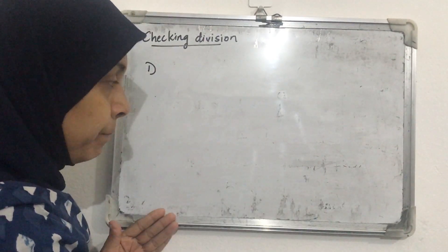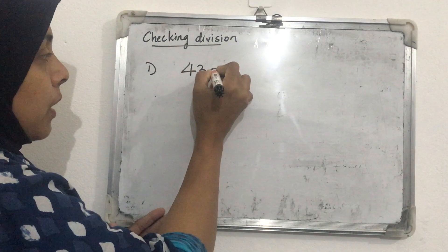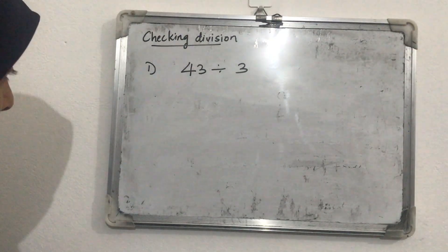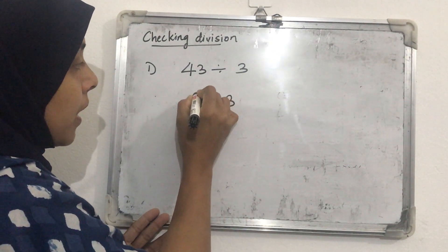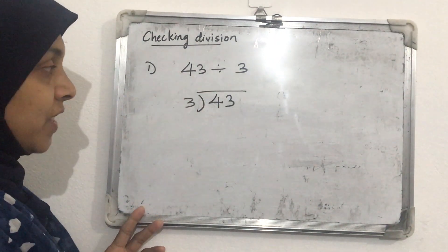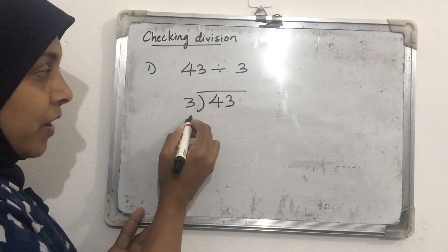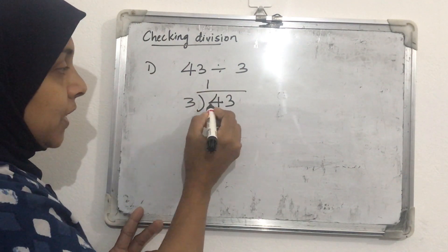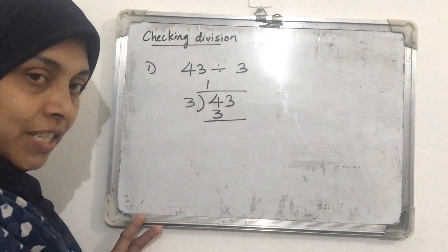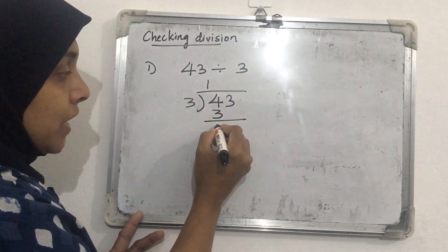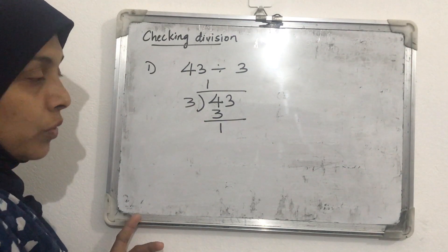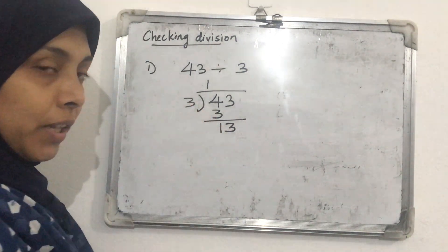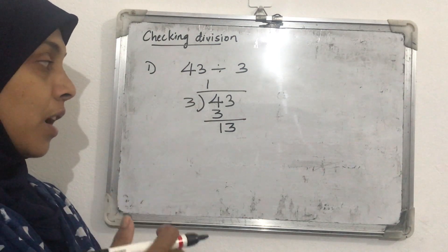Now let's try another question: 43 divided by 3. We write the dividend 43 and divisor 3 in normal division form. First, 4 divided by 3 — how many 3s in 4? Only 1. So 1 multiplied by 3 is 3. We write 3 below, subtract: 4 minus 3 is 1, then bring down the next digit 3, giving us 13.